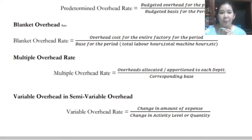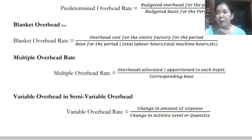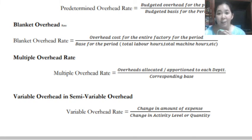For the multiple overhead rate, this is equal to the overhead allocated or apportioned to each department divided by the corresponding base. The multiple overhead rate accounts for factory overhead coming from other departments or parts of the organization which will be allocated to our department. They are pooled together and then divided according to the basis the entity uses, to determine how much of this additional overhead will be charged to the production or product.